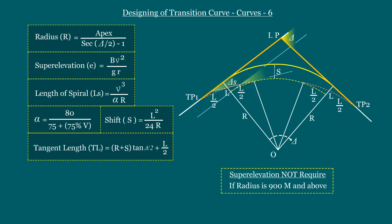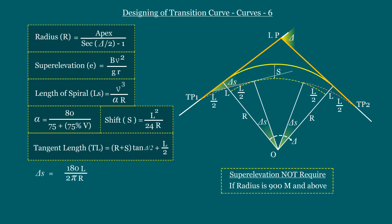The eighth step is finding the value of delta s. The formula: delta s = l/(2r). Here, l is the length of the spiral in meters and r is the radius of the circular curve in meters, so the value arrived will be in radians. To convert to degrees, multiply by 180/π — that is, delta s = 180l/(2πr). Now let us calculate delta c: delta c = delta minus 2·delta s.